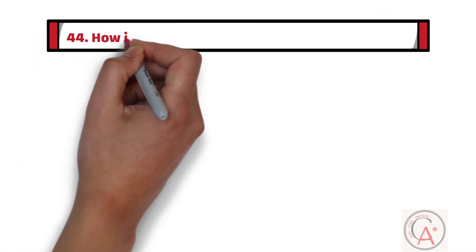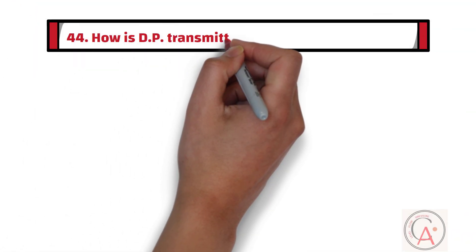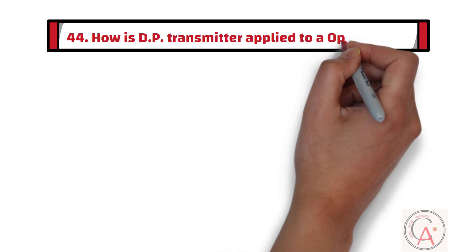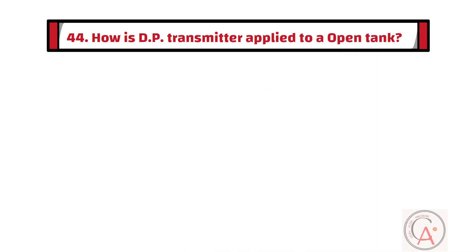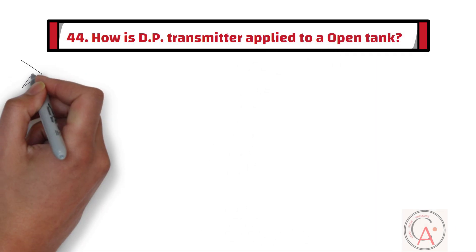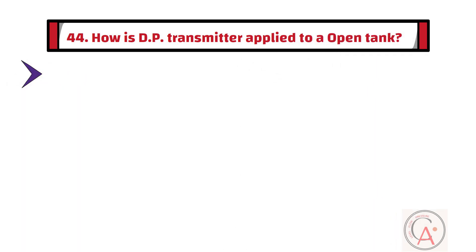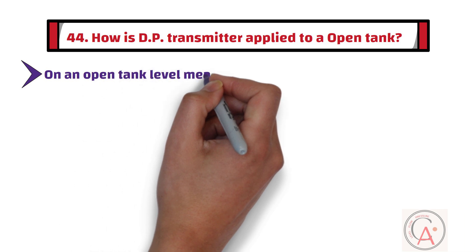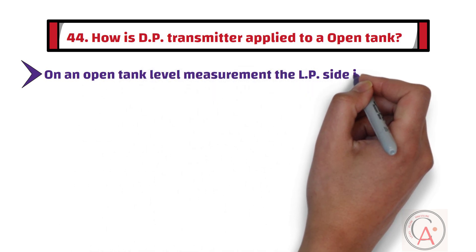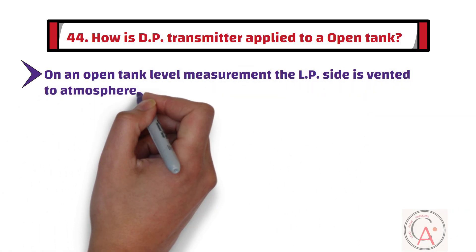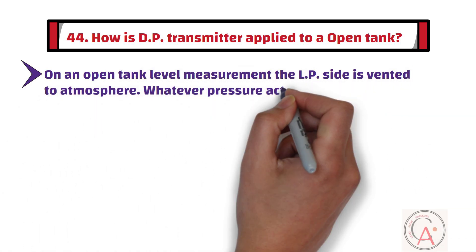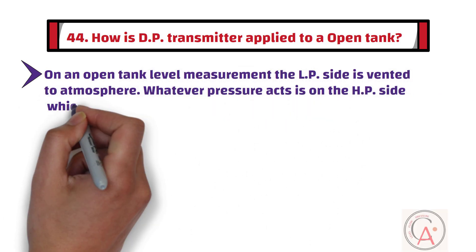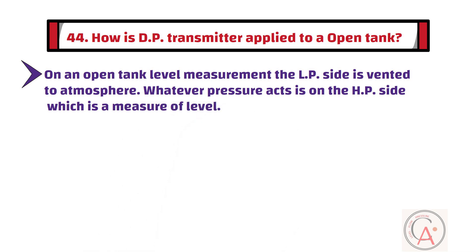Question 44: How is a DP transmitter applied to an open tank? In an open tank level measurement, the LP side is vented to the atmosphere. Whatever pressure acts is on the HP side, which is a measure of level.